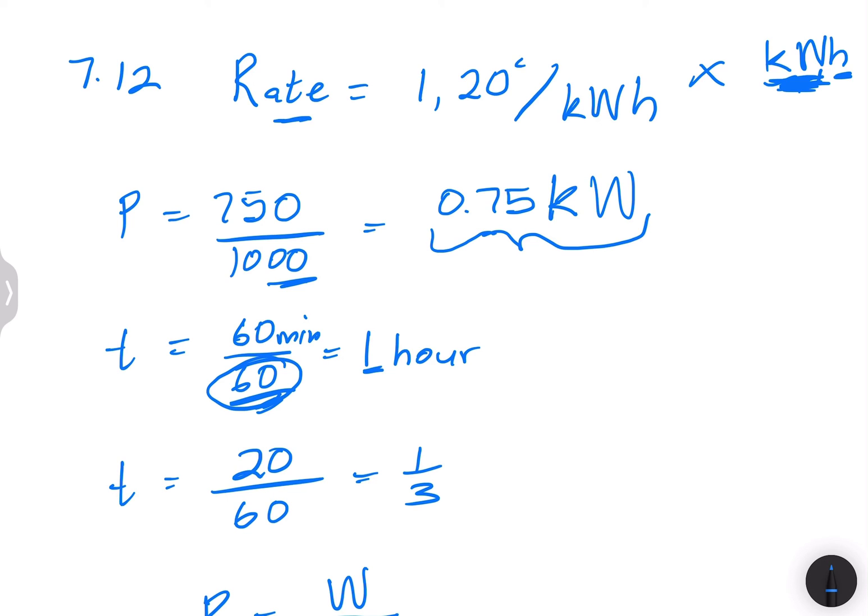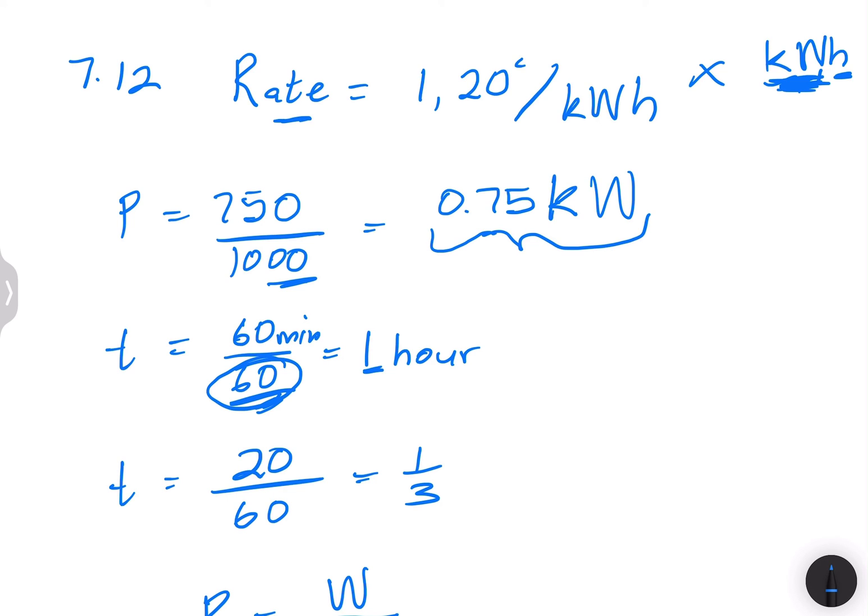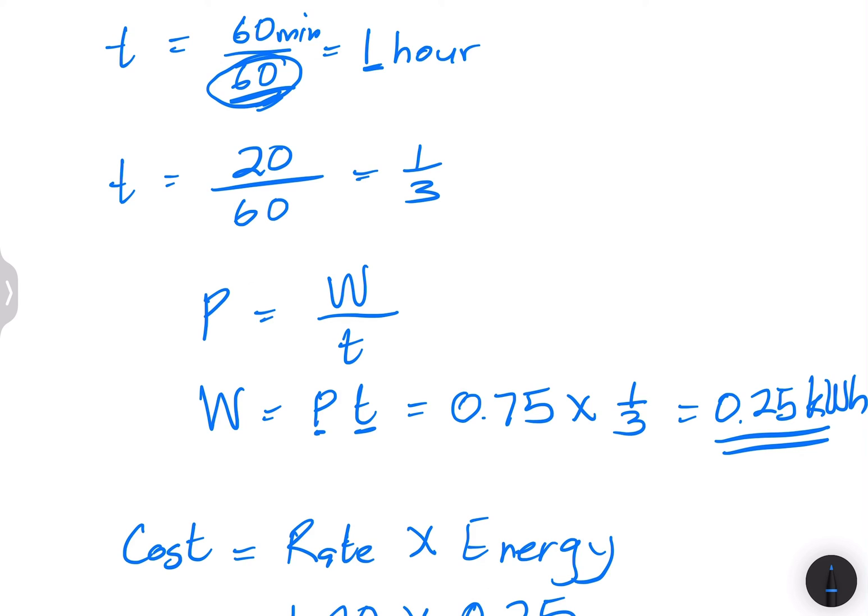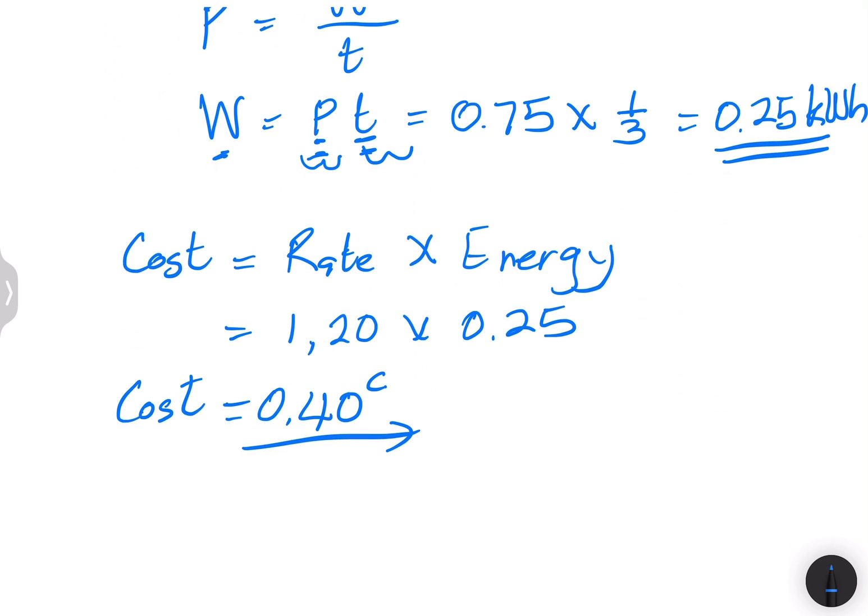And of course, finally, we said you just simply find the energy by taking power multiplied by time so that it's in kilowatts and in hours as well. So in this case, then you multiply to get the cost. You say it's the rate multiplied by the energy.